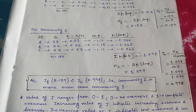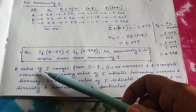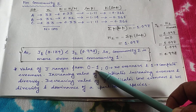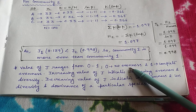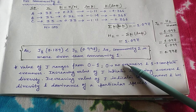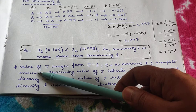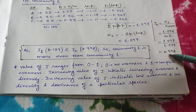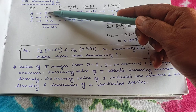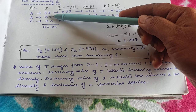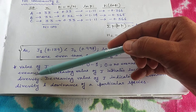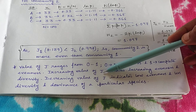Some important information about Pielou's index: the value of J ranges from 0 to 1. When J equals 0, that means there is no evenness — one of the species is dominating. When J equals 1, that means there is complete evenness. In community 2, the value of J is near 1 at 0.998 because all three species are almost evenly distributed. An increasing value of J — moving towards 1 — indicates increasing evenness and also increasing diversity, since whenever evenness increases, diversity also increases.